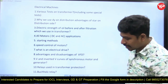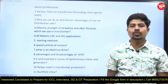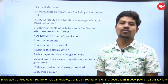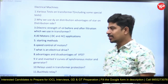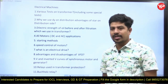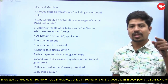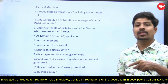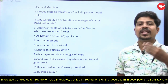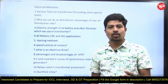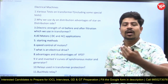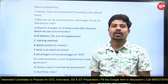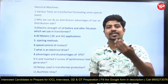The next question is: why do we use star on the distribution side, and what are the advantages of star on a distribution transformer? In a delta-star transformer, there are many advantages. Star provides a neutral point which is grounded, so if any fault occurs, there is a path for fault current to flow. There are many advantages like that.